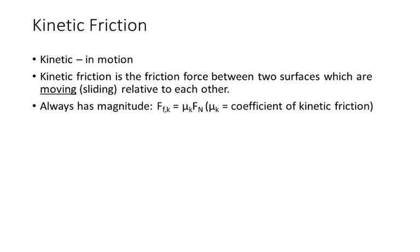Now friction comes in two flavors. When friction acts on something that is in motion, we refer to it as kinetic friction — the word kinetic just means in motion. That happens when the two surfaces are moving relative to each other, which you may also refer to as sliding. A baseball player sliding would be an example of kinetic friction. Kinetic friction always has magnitude equal to the coefficient of kinetic friction times the normal force — that is always true about kinetic friction.